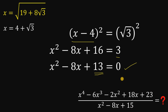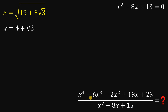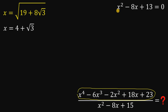Now the problem is the numerator: x to the fourth power minus 6x cubed minus 2x squared plus 18x plus 23. To find its value, we will divide this numerator by x squared minus 8x plus 13, using the remainder theorem with synthetic division.